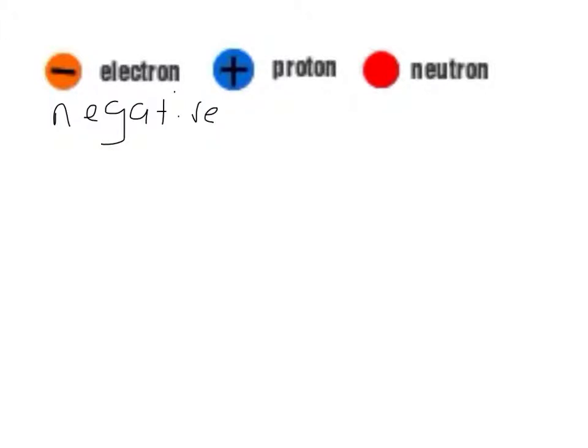Protons are the next subatomic particle, and they have a positive charge. Neutrons are the third subatomic particle. They have a neutral charge.